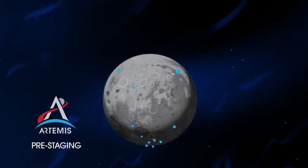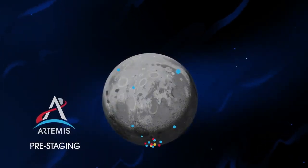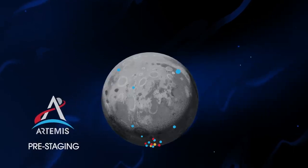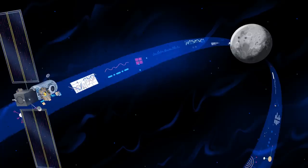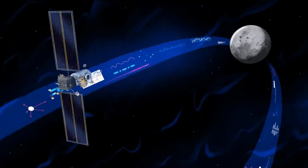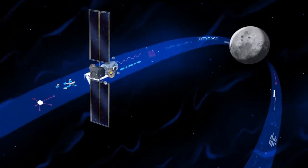Everything needed for lunar missions will be positioned in advance by commercial and international partners. This includes rovers, science experiments, and human-rated systems on the surface. But it also includes a dedicated lunar station in orbit around the Moon called Gateway.